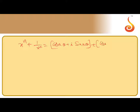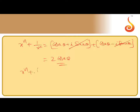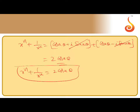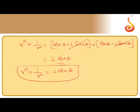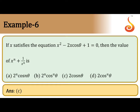Adding x^n and 1 by x^n: cos(nθ) plus i·sin(nθ) plus cos(nθ) minus i·sin(nθ). The sine terms cancel, giving 2·cos(nθ). So x^n plus 1 by x^n equals 2·cos(nθ). Checking the options, option C, which is 2·cos(nθ), is the right answer.